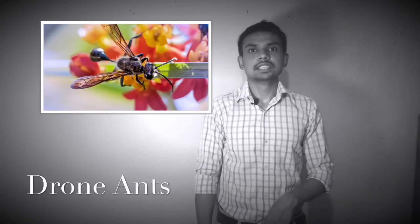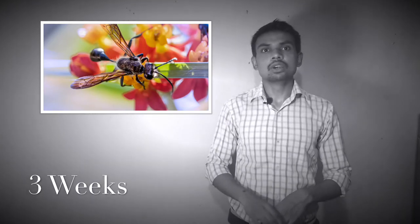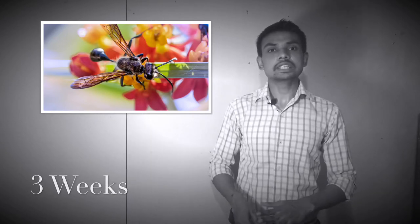Next, drone ants. Their life circle is 3 weeks. There are female workers in the drone ants, and male behavior is very lazy. The work of females is to create new colonies, and the work of females, their life circle is less than 3 weeks.